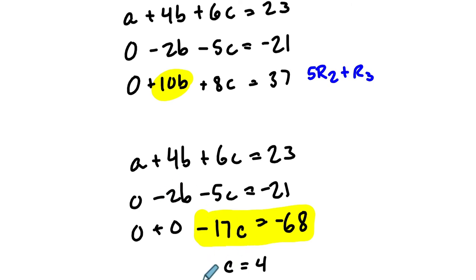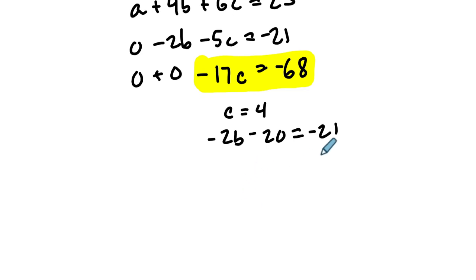And now we can solve for B. We know that negative 2B minus 5 times C, so minus 5 times 4, 20, equals negative 21. Let's solve for B. Add 20 to both sides. Negative 2B is negative 1. And then divide by negative 2. B is 1 half.